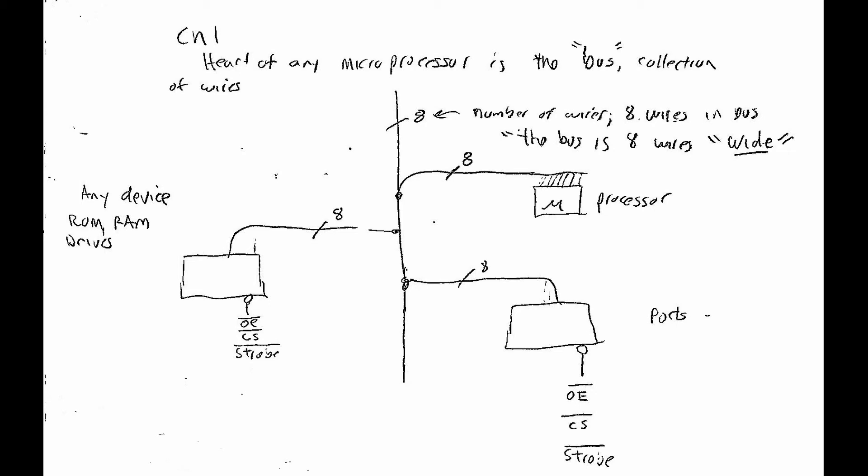That is why all chips, all RAM, ROM, all devices have a pin that's called output enable not, chip set not, or strobe not. And in order to activate the device, you take that pin low. Meanwhile, all the other pins are taken high, which means that they appear to be disconnected from the bus.